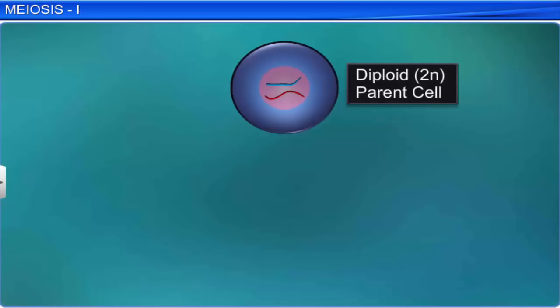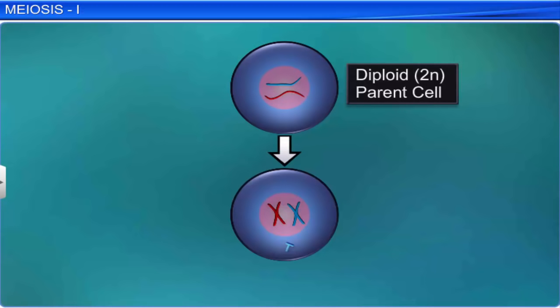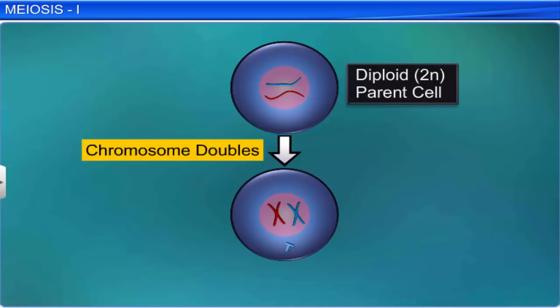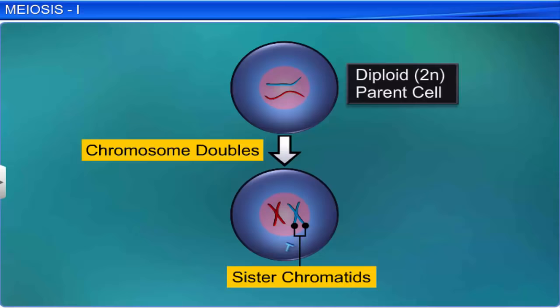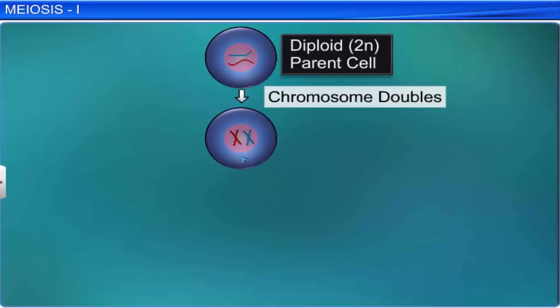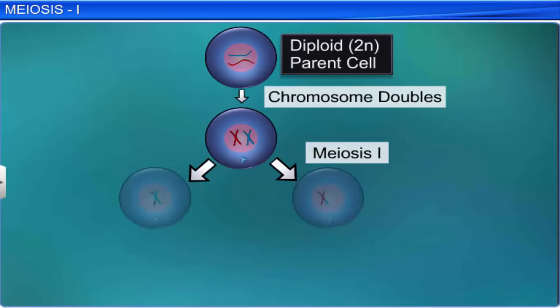Meiosis, like mitosis, is also preceded by an interphase stage, during which DNA replicates and each chromosome doubles to consist of two identical strands of DNA. Meiosis consists of two cell divisions, namely meiosis 1 and meiosis 2.